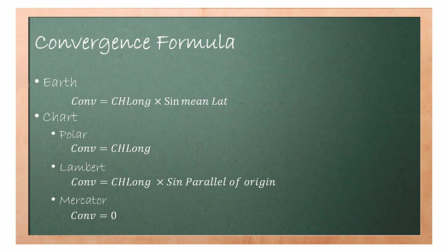There are four types of convergence in the General Navigation subject. The first is Earth convergence: Convergence = Change in Longitude × sin(Mean Latitude). The second type is chart convergence, which is divided into three: Polar Stereographic convergence = Change in Longitude; Lambert convergence = Change in Longitude × sin(Parallel of Origin); and Mercator convergence = 0.